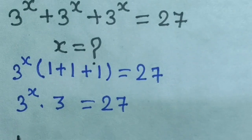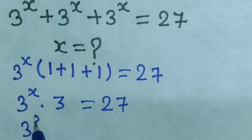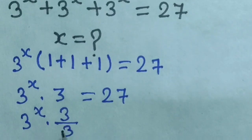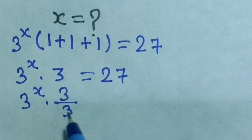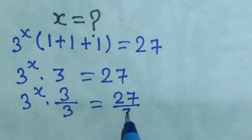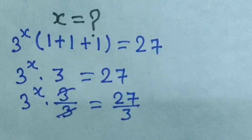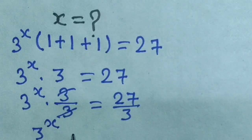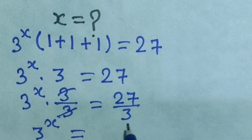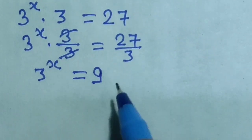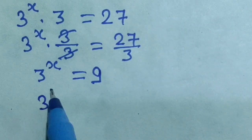Now we divide both sides by 3. So 3 power x into 3 divided by 3 equals 27 divided by 3. The 3s cancel, so 3 power x equals 9.